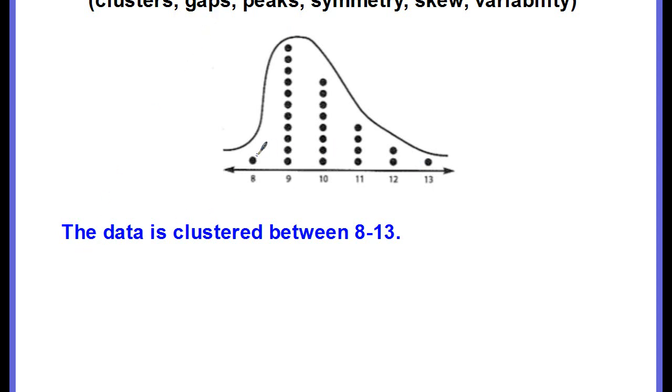Are there any gaps? No, there are no gaps. A gap would be if, say, there were no dots at 12. If there were no dots here, then you could say there was a gap at 12. But there are no gaps.